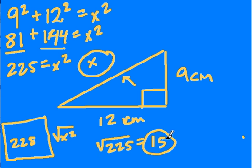So x is 15 because 15 times 15 is 225, and that equals 9 squared plus 12 squared.